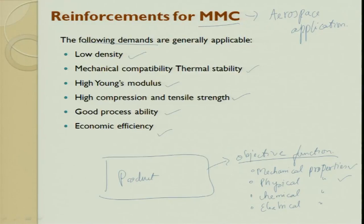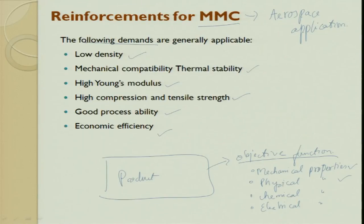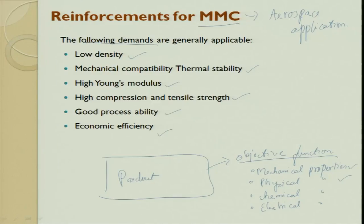To arrest property changes at high temperature, we add one more phase to stop expansion and contraction. The demands from the application point of view: low density, mechanically compatible with thermal stability for high temperature, high Young's modulus, high compression and tensile strength, and good processability — meaning producing the required product economically in terms of number of steps, machine capital investment, and process reliability. High capital cost makes processing a challenge and eliminates customers.